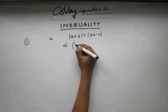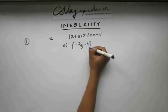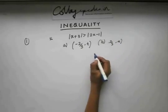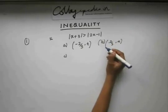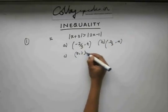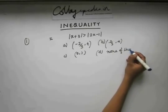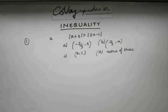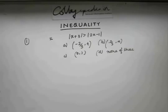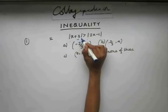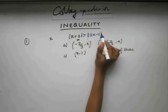Let's see what options are given. In questions related to absolute value of a real number, whenever you get questions like this where you have modulus on both sides, one approach you can take to get rid of the mod sign is squaring both sides.